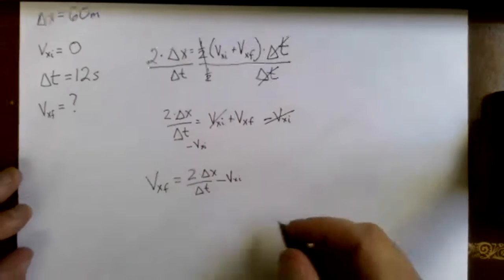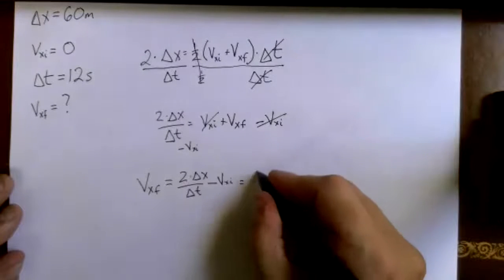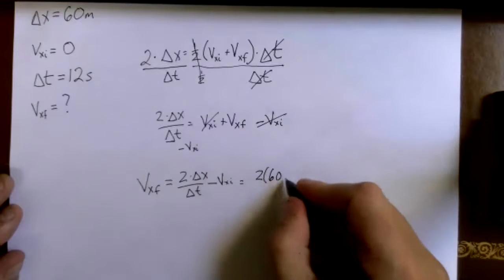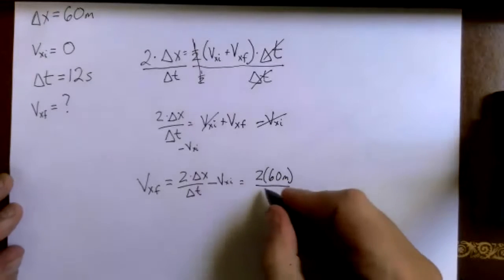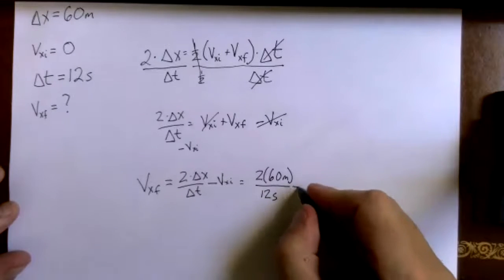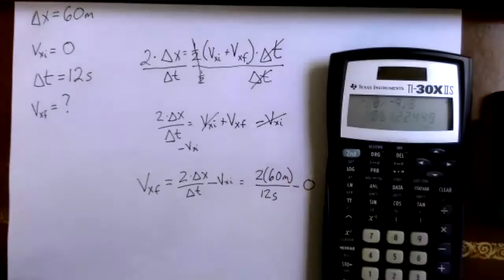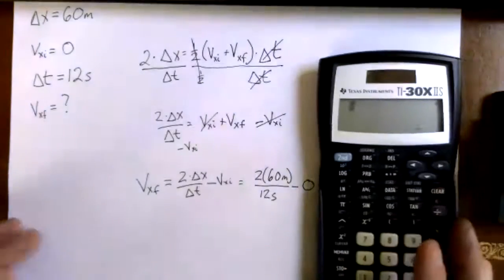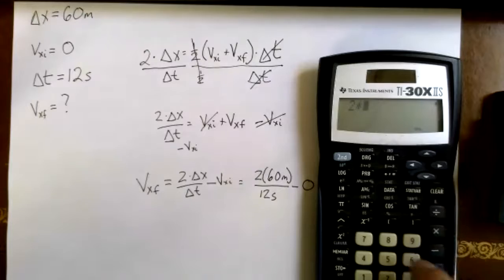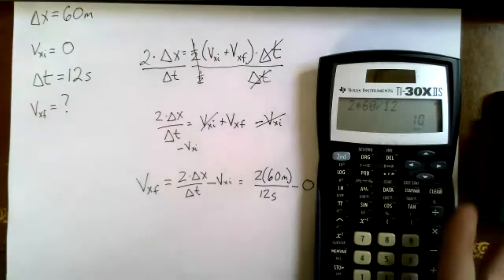Now I can plug in my numbers: 2 times 60 meters divided by my time, which was 12 seconds, and then just minus zero, and that's not going to do anything for us. You can do that one in your head: two times 60 divided by 12 and you get 10.